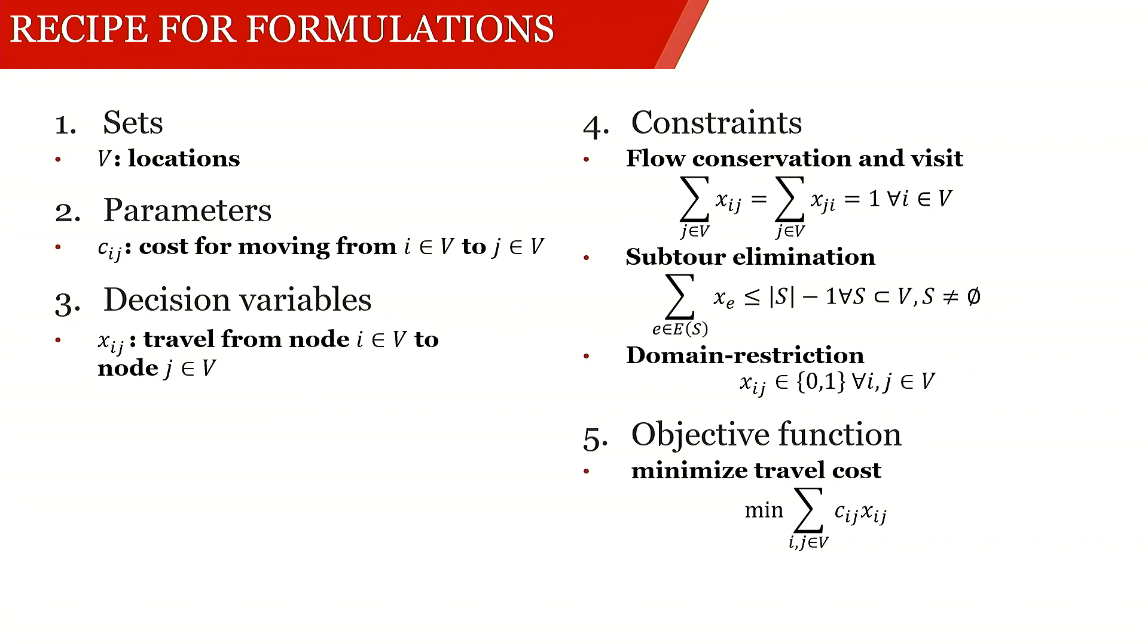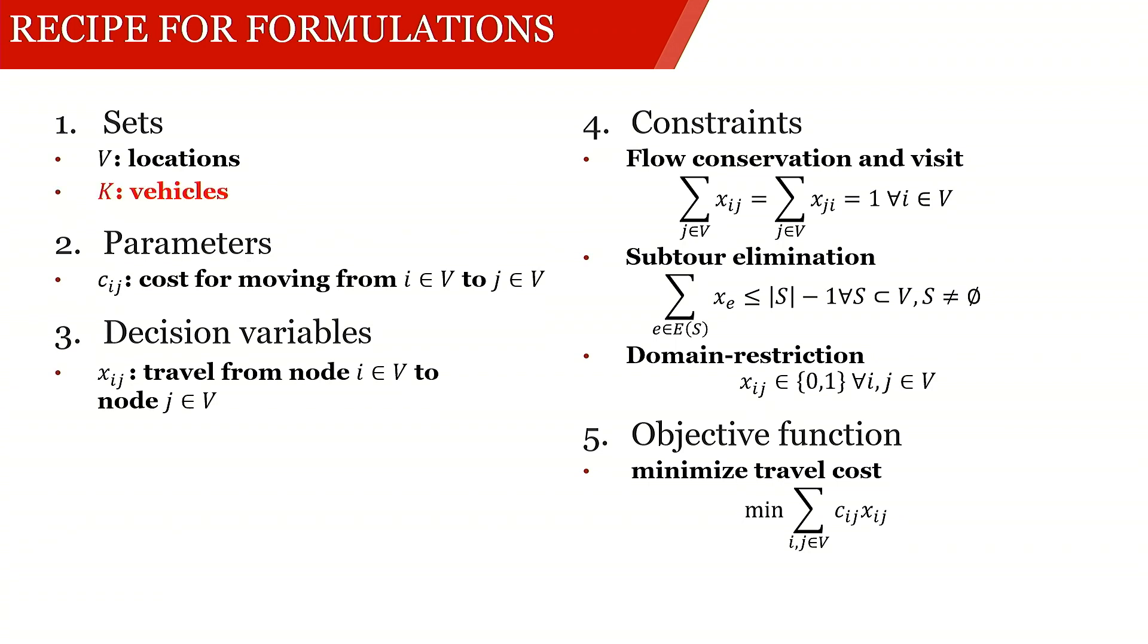The easiest way of adapting this to the multi-vehicle case is introducing a set that refers to these multiple vehicles. We refer to the set as k. Obviously, k then also has to enter the decision variables. So we have to introduce an additional index to this decision variable x. And then x_ijk refers to a vehicle k in K traveling from i in V to j in V. Obviously, we also have to introduce this index k in all x variables in the constraints and the objective function.